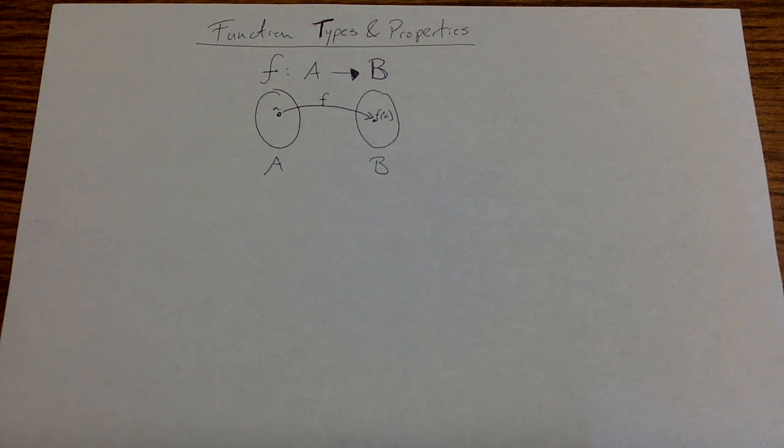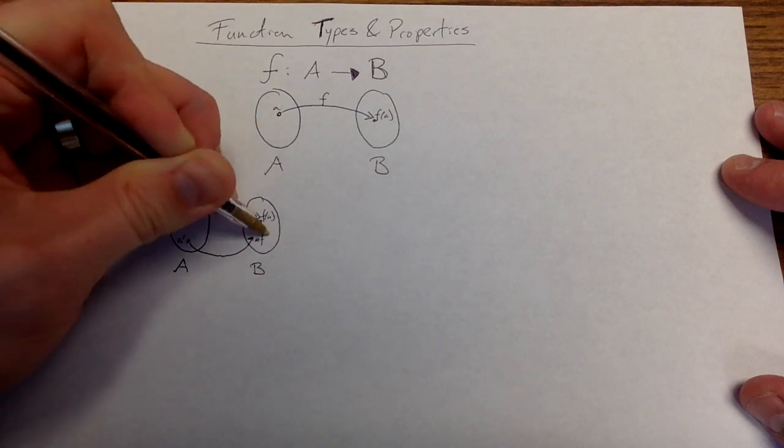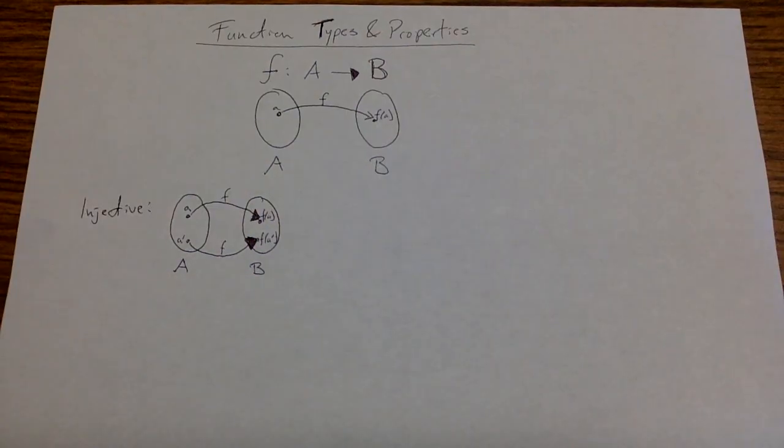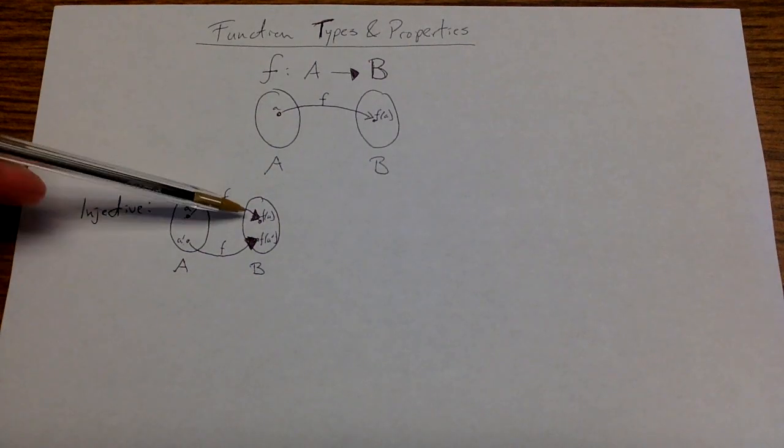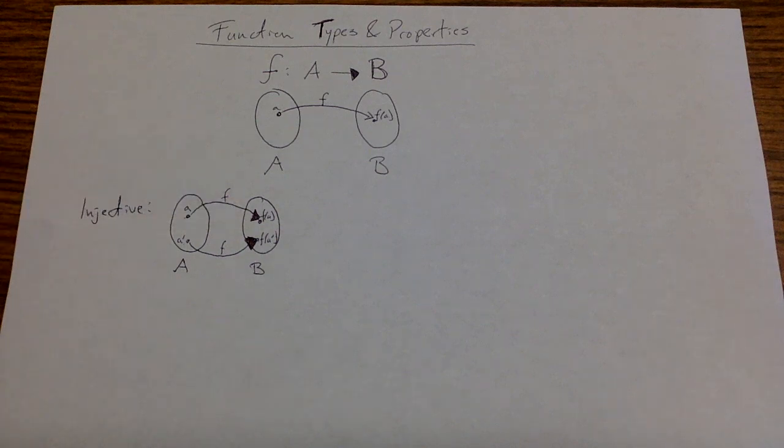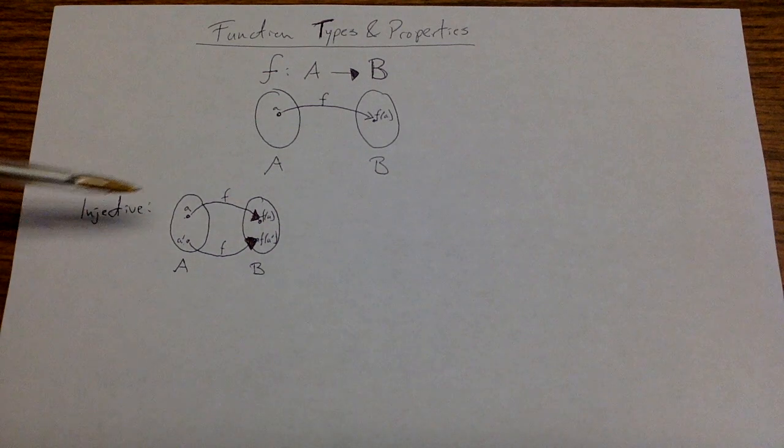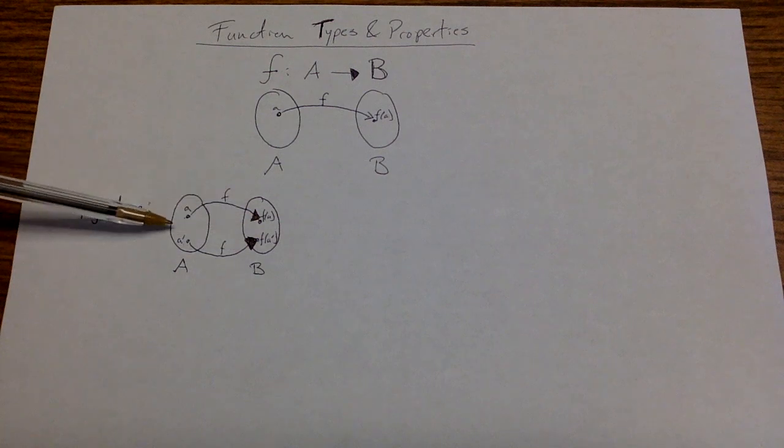The first thing to think about is an injective function. For an injective function, I have this property because I'm a function, that everything on the left has exactly one arrow going out of it. However, I do also have the property in an injective that everything on the right has at most one arrow coming into it.